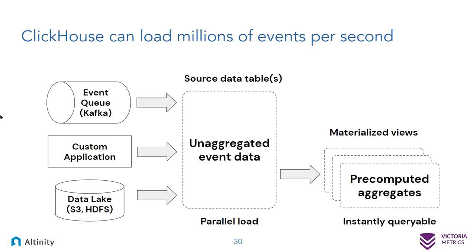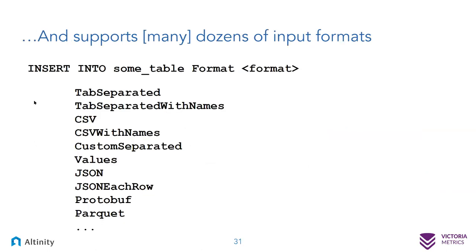Another key property of ClickHouse is it has dozens of input formats built in. You say INSERT, give a table name, and then give a format — tab-separated values, normal SQL values, JSON each row, Protobuf, Parquet, ORC, and more. Every month another format is probably added — it's moving forward very quickly. This means no matter what form your data is in, there's a pretty good chance ClickHouse can just read it, stick it in a table, and you can run queries on it.